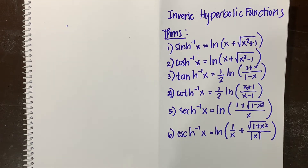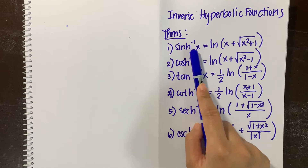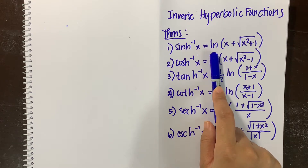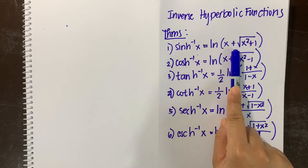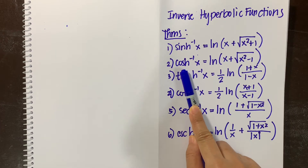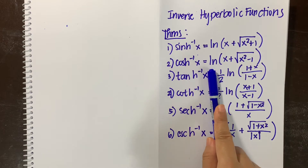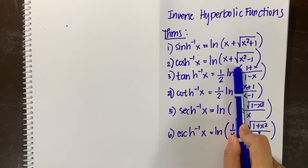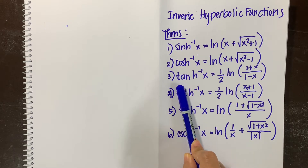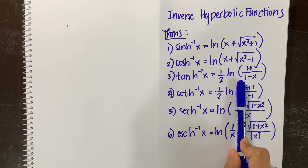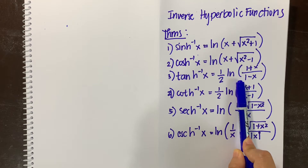We consider the following theorems: the inverse hyperbolic sine of x is equal to ln of the quantity x plus the square root of x squared plus 1. The inverse hyperbolic cosine of x is equal to ln of the quantity x plus the square root of x squared minus 1. The inverse hyperbolic tangent of x is equal to one-half of ln of the quantity 1 plus x all over 1 minus x.